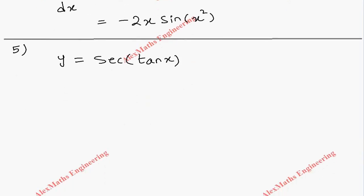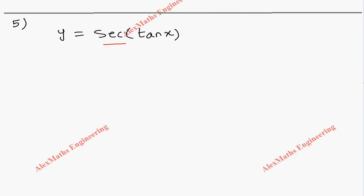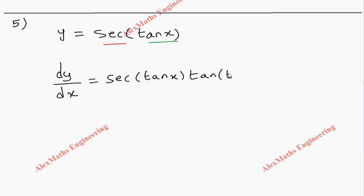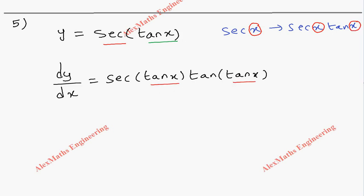Next: y = sec(tan x). Here the outer function is secant and the inner function is tan x. First we differentiate the outer function: the differentiation of sec x is sec x·tan x. So we write sec(tan x)·tan(tan x), because in the formula for differentiation of sec x, both occurrences of x are replaced by tan x. Once the outer differentiation is completed, we differentiate the inner function tan x, which is sec²(x).